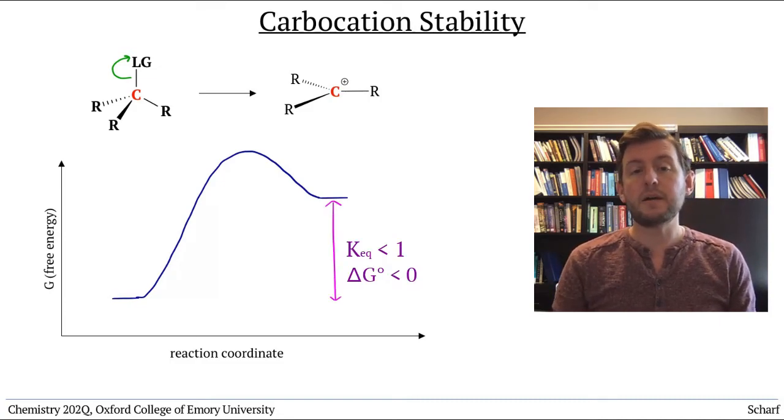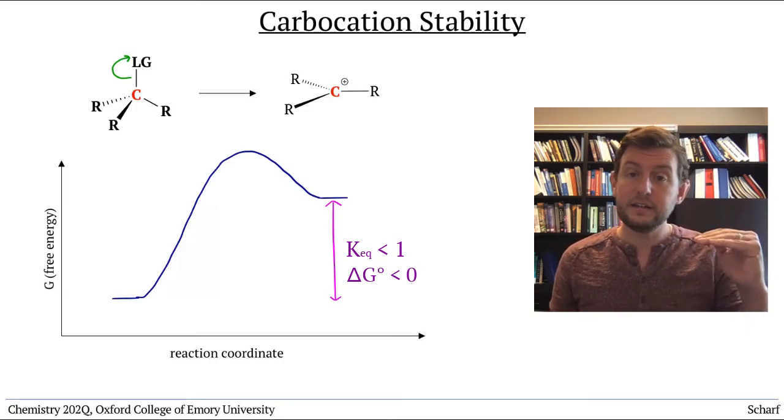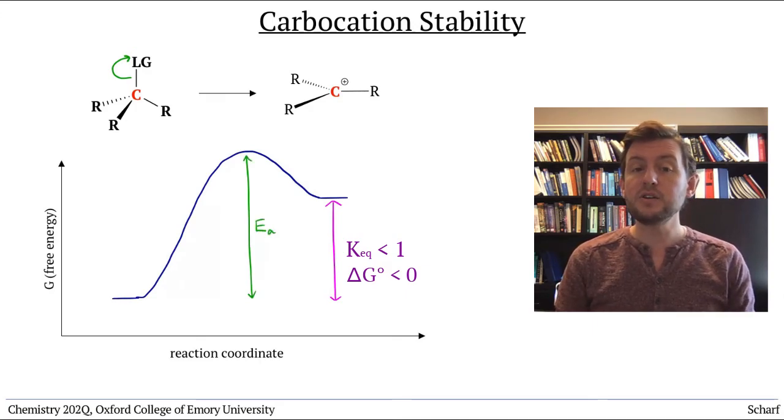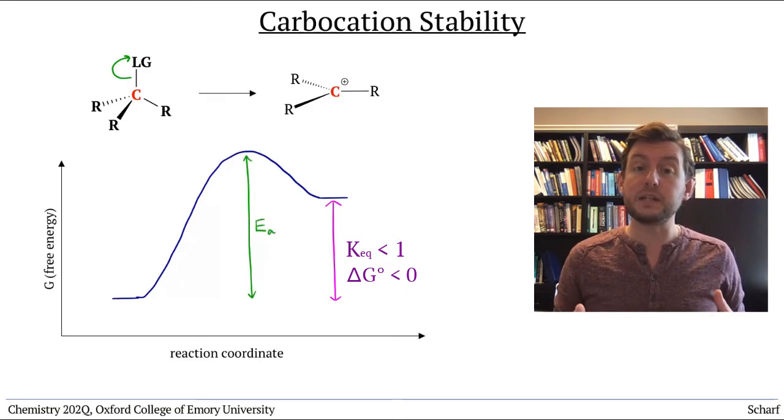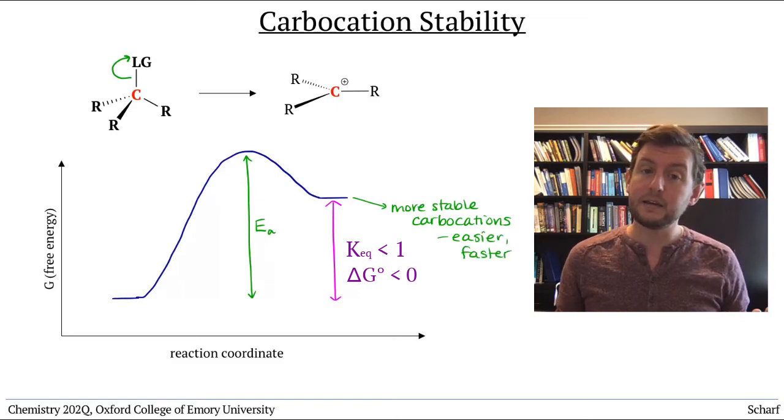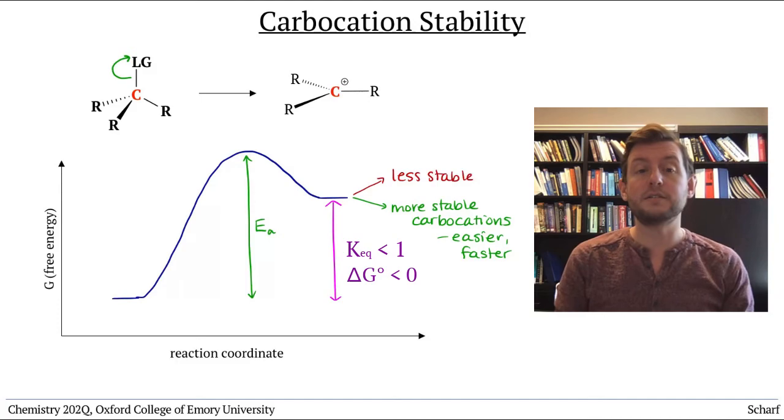Since the activation energy barrier is related to the stability of the carbocation, the rate of the SN1 reaction is largely governed by the stability of the carbocation. More stable carbocations are easier to form, so form more rapidly. The less stable the carbocation, the more difficult it is to form, the slower the SN1 reaction.